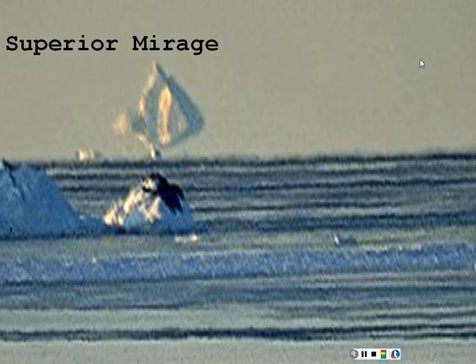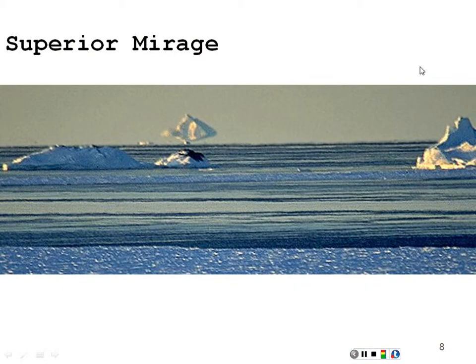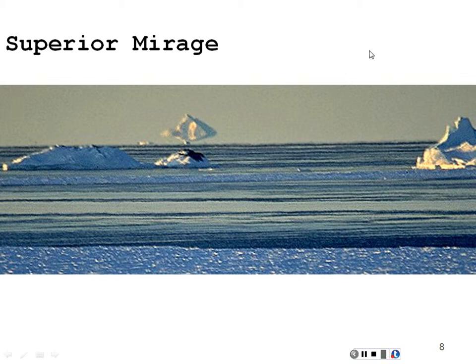A superior mirage could happen the same way. Say the air above is hotter than the air closer to the water. If you had an iceberg on the water, one image comes directly towards you, while another ray going away from you is bent back toward you by the heated air — so you see a secondary image of the same object, appearing to be an iceberg floating in the air. It's either a superior mirage or it could be an actual UFO.